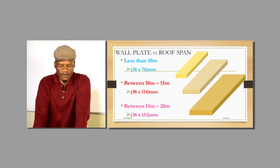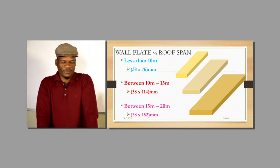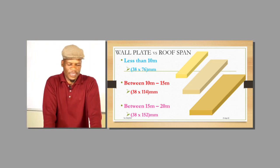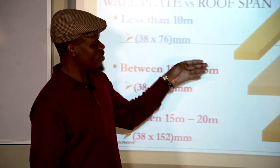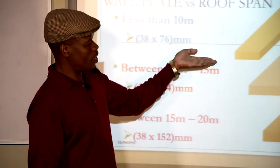There are different sizes of wall plate, and the size to use must be based on the roof span. If the roof span is less than 10 metres, use 38 by 76. If it is between 10 and 15 metres, use 38 by 114. If it is between 15 and 20 metres, use 38 by 114. All of them have a width of 38 mm because the cross-section width must be exactly the same as the size of the buttons, for the purpose of applying the ceiling underneath the building.